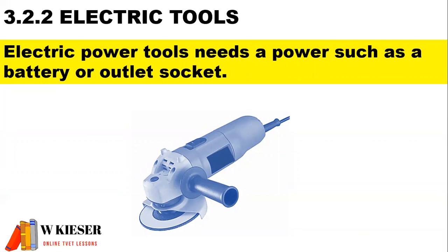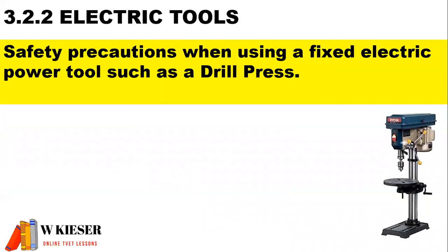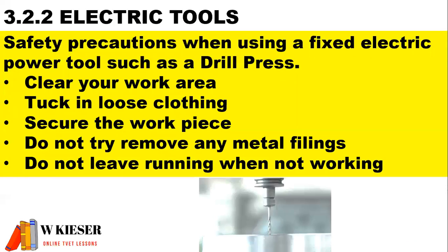For electric tools: electric power tools need a power source such as a battery or outlet socket. A fixed electric power tool such as a drill press requires safety precautions: clear your work area, tuck in loose clothing, secure the work piece, do not try to remove any metal filings, and do not leave it running when not working.